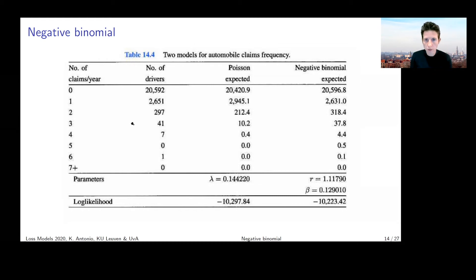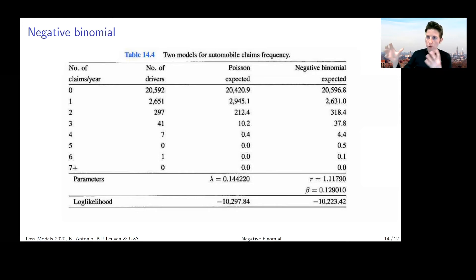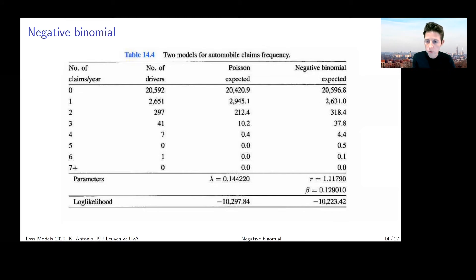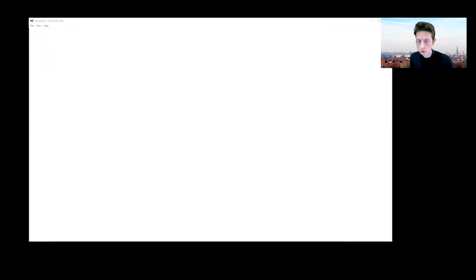We're going to calculate the expected number of observations under the fitted model that would file zero claims, one claim, two claims, and so on. Think about how you would do this — how you would calculate from a calibrated Poisson or a calibrated negative binomial model the expected number of observations filing each claim count. We'll go through this after the break, and we'll also do it in the computer lab next week on actual data.